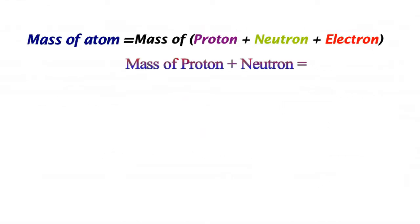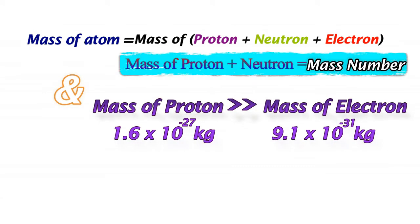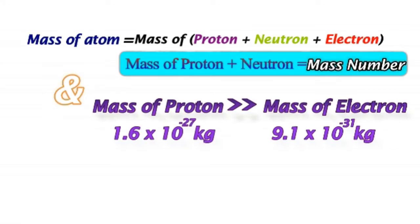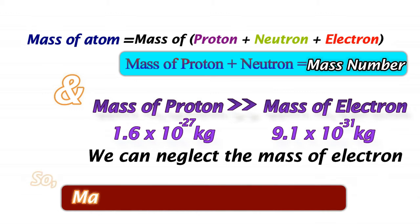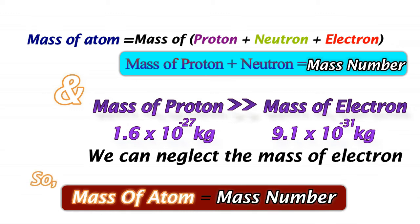As we know, the mass of the proton and neutron is equal to the mass number, and the mass of the proton is much larger than that of electron, so we can neglect the mass of the electron. Now, the mass of the atom is equal to its mass number.